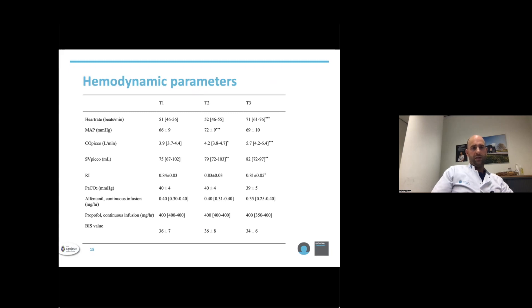At T3, cardiac output increased significantly, as you can see here. That increase is most likely explained by a higher heart rate, as stroke volume remains relatively constant.